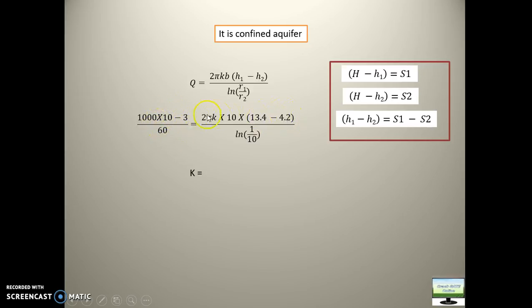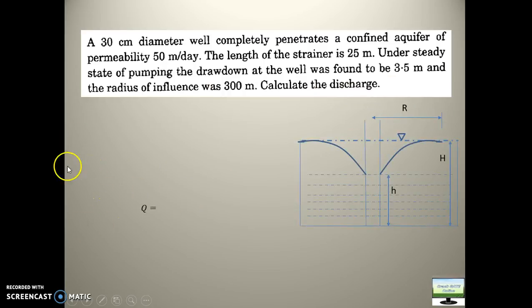And please be careful about the unit. This 10 to the minus 3 has been written to convert that liter per minute into meter cube per second. And here also, while writing the formula, you write all the units side by side. So that all the formula should be identical dimensionally. There should be no error in the dimension. Otherwise, entire calculation will go wrong.